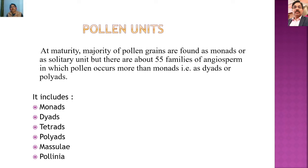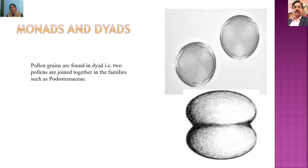In many families, pollen grains remain joined with each other, forming pollen units. In most angiosperms pollen grains are found as monads or solitary units, but there are about 55 families of angiosperms in which pollen occurs as diads or polyads. The pollen units include monads, diads, tetrads, polyads, massulae, and pollinia.